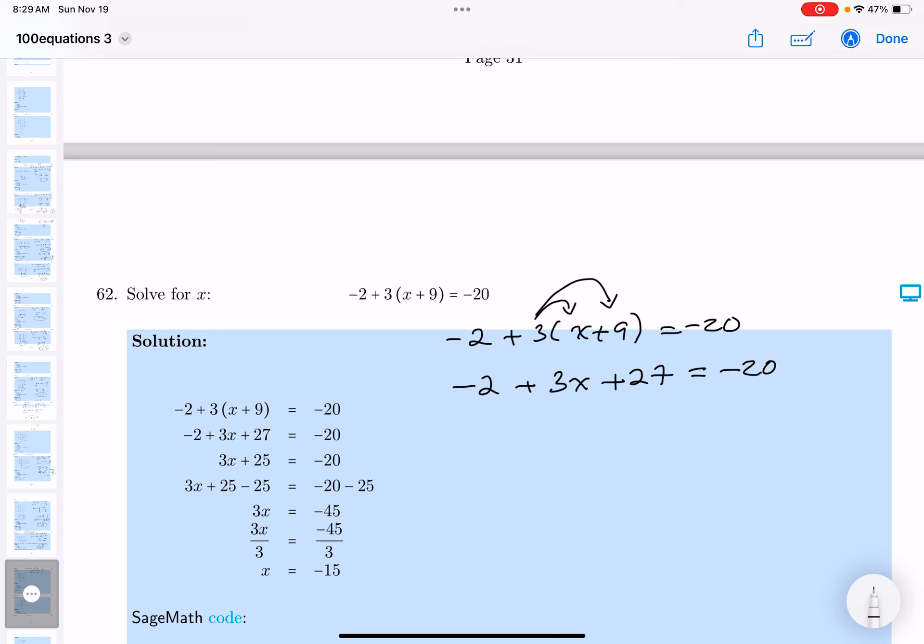I'm going to still simplify the left-hand side because there's two terms I can add together. That's going to be 3x plus 25. 27 minus 2 is 25, and that equals minus 20.